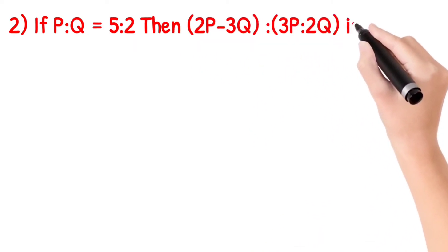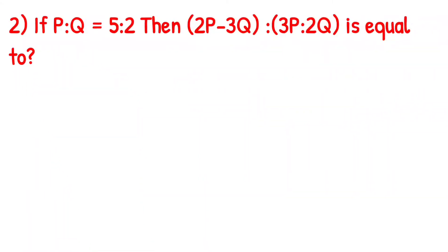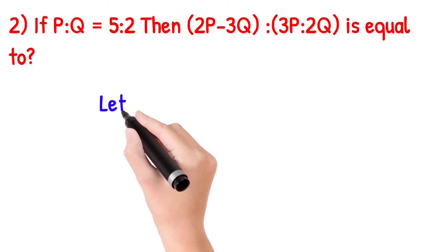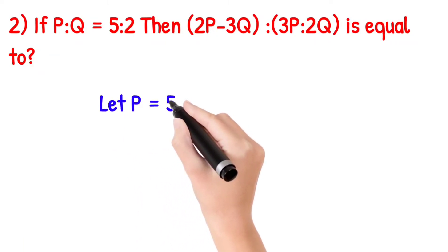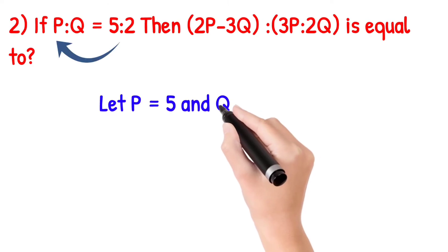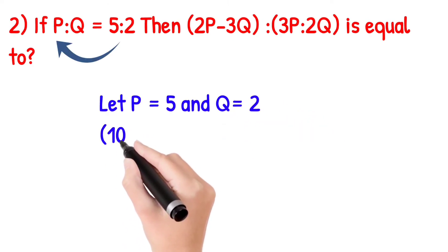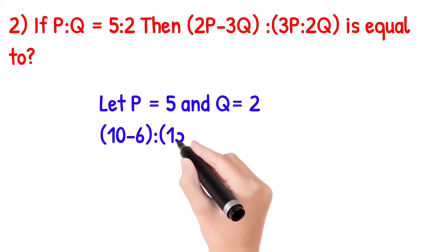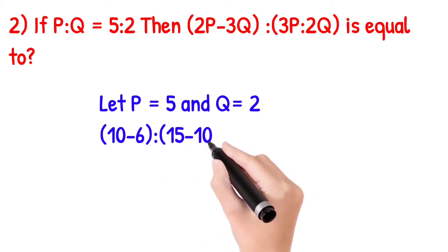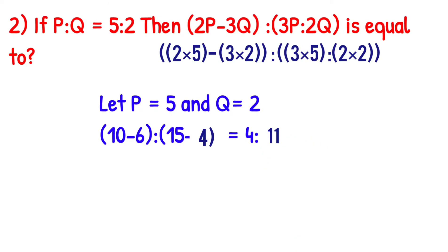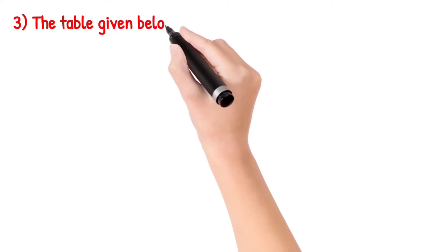Next question: If P is to Q is equal to 5 is to 2, then what is the value of 2P minus 3Q divided by 3P minus 2Q? We substitute P equal to 5 and Q equal to 2. It is simple — if you have the ratio, you can answer it in a single line.